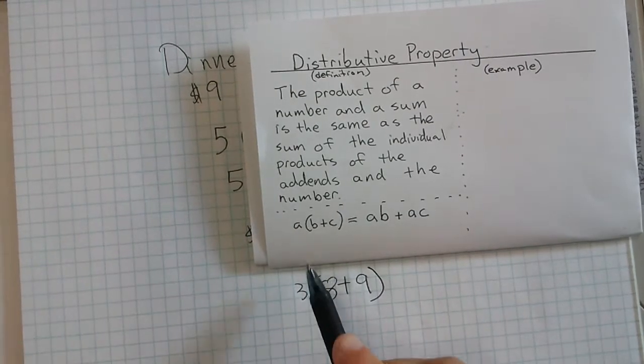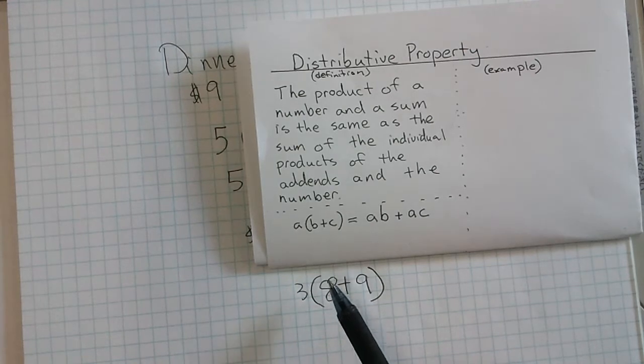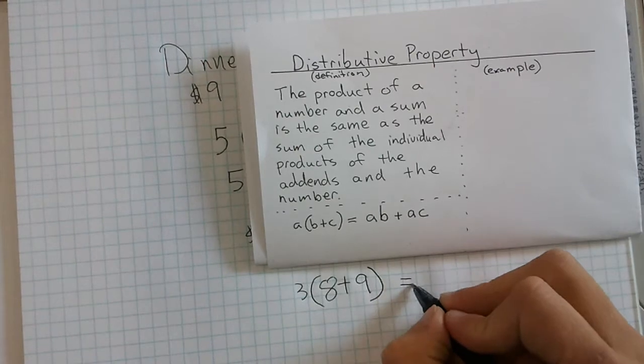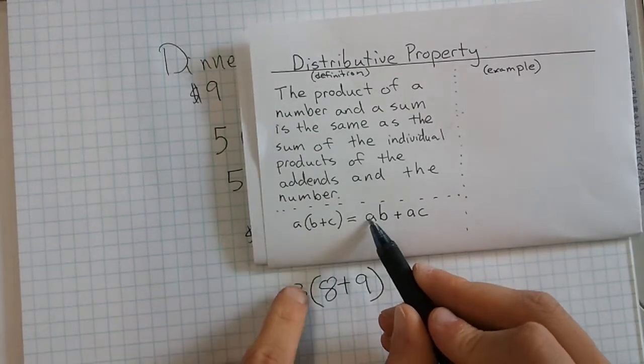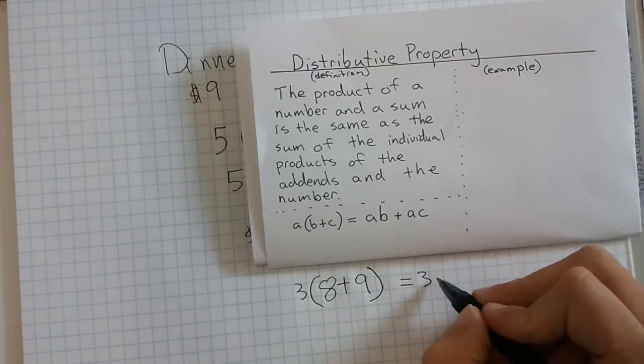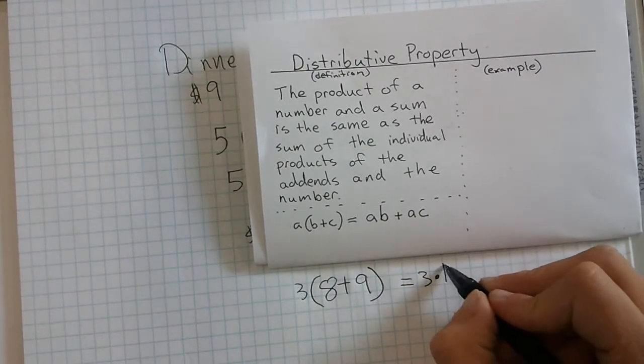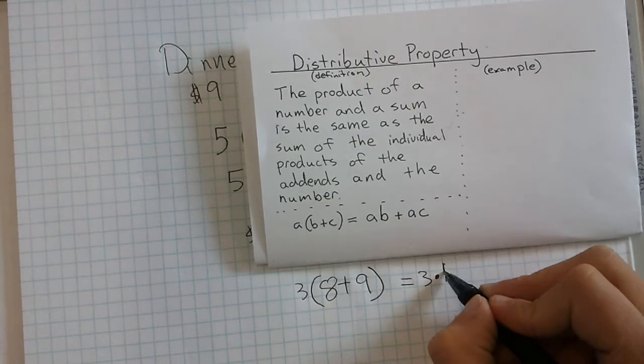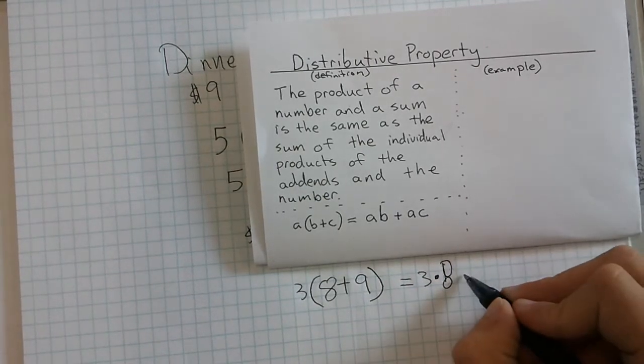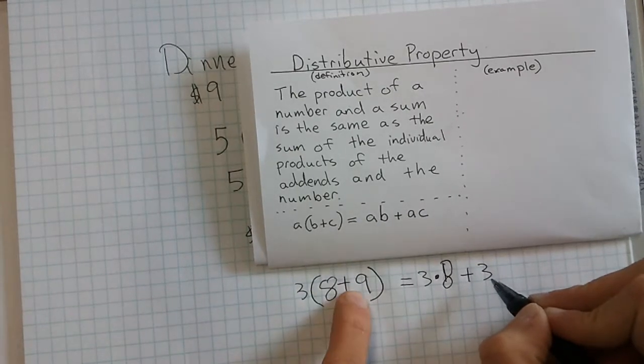We could say this would represent the a, 3 could be b, the 8, and c could be the 9. That tells me I could actually rewrite it, keeping my numbers in the same variable. So this would be 3 times b, which is going to be 8, plus a again times c, which is times 9.